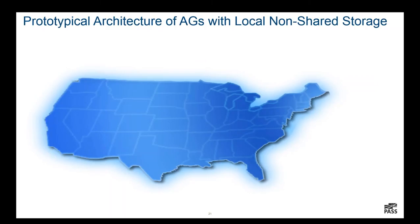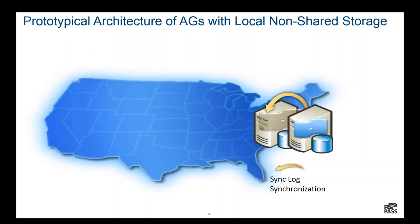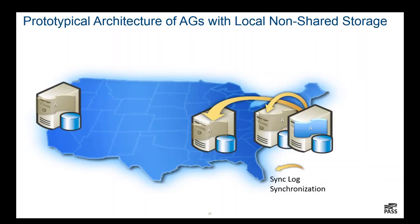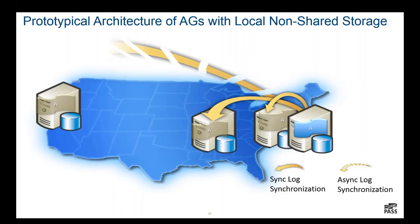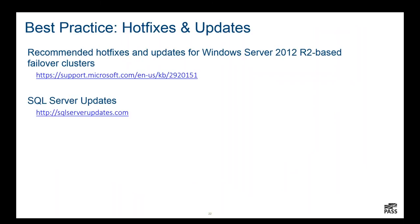A typical prototypical architecture of AGs with local non-shared storage: we have a primary, a local secondary in sync replication, a geo-distributed secondary also in sync mode due to proximity, and a geo-distributed secondary on the left coast in async replication. AGs are eminently flexible in their configuration, and options expand further if you add failover cluster instances. The best practice before building your Always On AG architecture is to prep your environment with the latest hotfixes, updates, service packs, and cumulative updates.